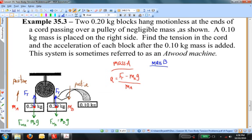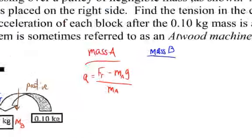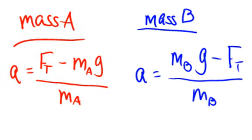The positive direction for mass B is downward. The unbalanced force is the weight of that object minus the string tension, divided by the mass of object B. We've written Newton's second law, and we can solve this system of equations. At this point, the physics is done and the algebra takes over. I have two equations and two unknowns.